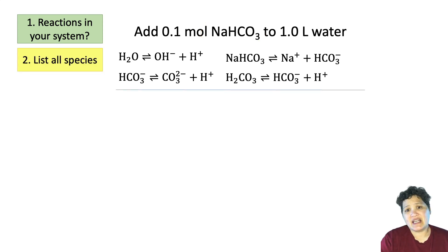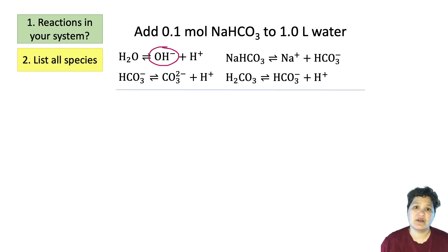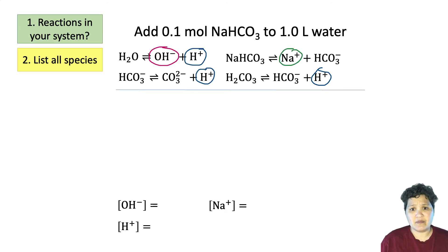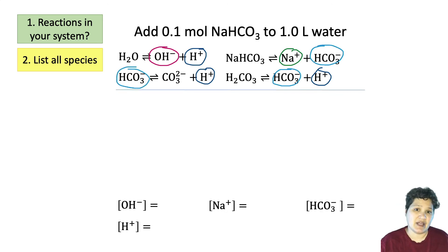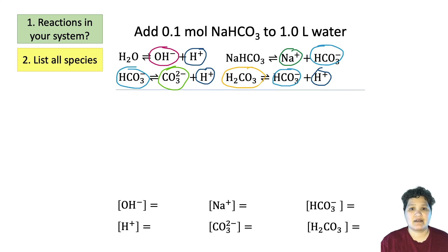The next step is to list all of the species. Going through the reactions one by one: we have OH⁻, H⁺ (appearing in three reactions), sodium ions, bicarbonate (appearing in three reactions), carbonate, and carbonic acid. So we have six different unknowns.